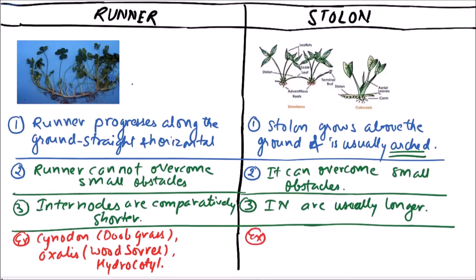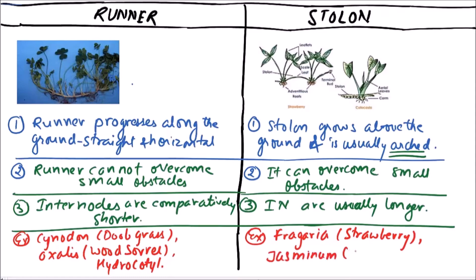In stolons, the examples are Fragaria, that is strawberry, and Jasminum, that is jasmine.